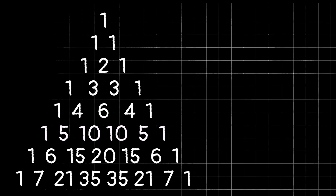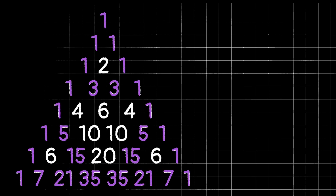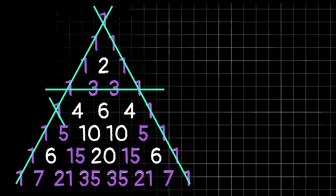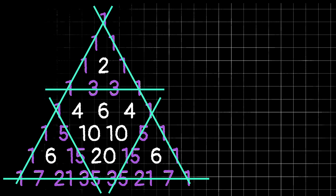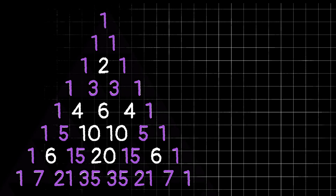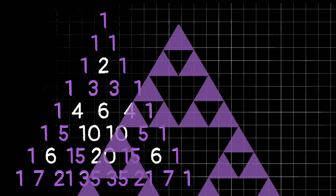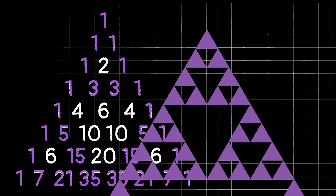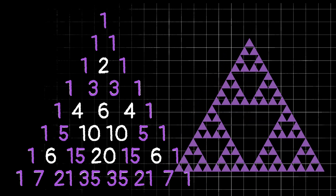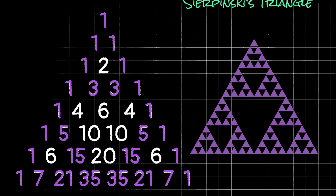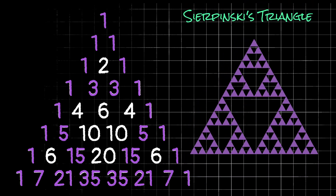This next one is pretty neat, especially if you like visual things. I want to take every odd number and color it purple, and leave all of the even numbers white. You might start to notice a pattern — which might not mean much unless you're a Legend of Zelda fan. But if we extend this pattern farther along Pascal's triangle, which continues on forever, you'll start to see a really cool pattern emerging. This is actually called Sierpinski's triangle, which is a type of fractal.